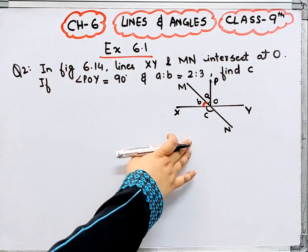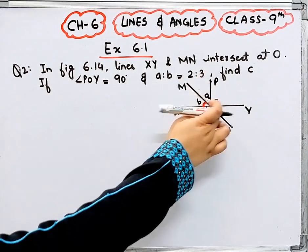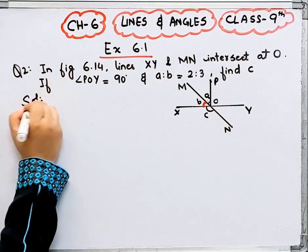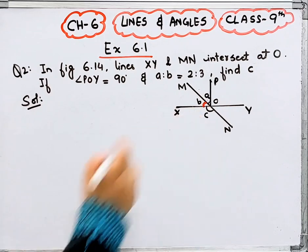Question number 2 is this figure. POY is a 90 degree angle. A is to B is given 2 is to 3. You have to find C angle.